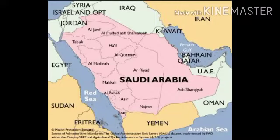Now let us learn about the location of Saudi Arabia. Saudi Arabia is a large country situated in the Arabian Peninsula. The Arabian Peninsula is located in the southwest of the continent of Asia. It is surrounded by Jordan, Iraq, and Kuwait in the north.